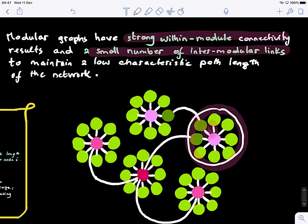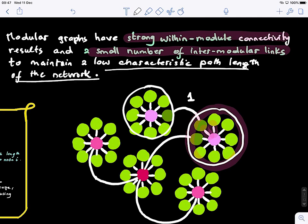But inter-module connections - there is a very small number of connections between modules, like this one. Now, this is to maintain a low characteristic path length of the network. So what is a characteristic path length of a graph or a network? Where did we see this? You guys remember?